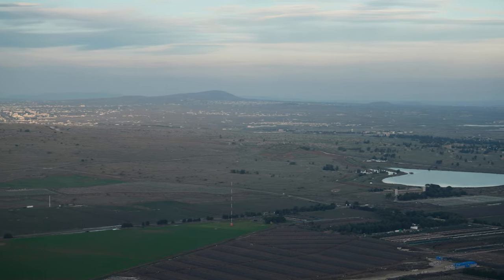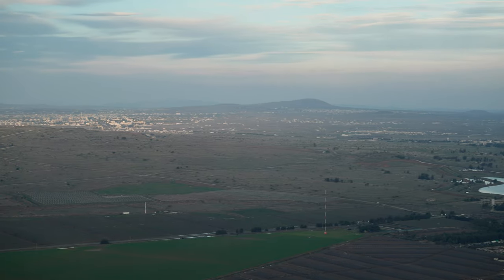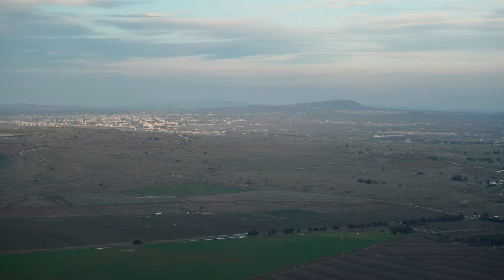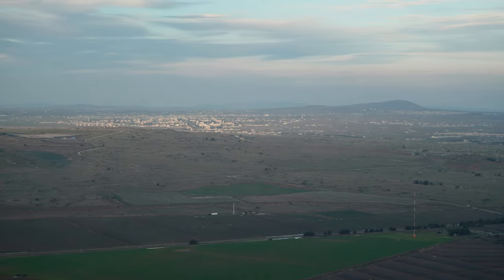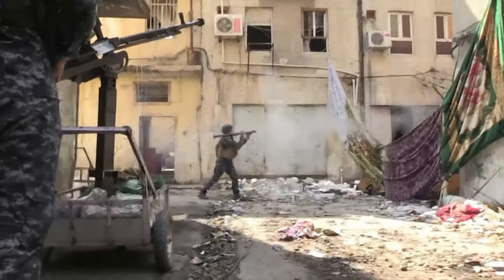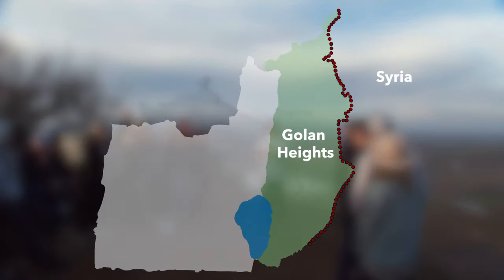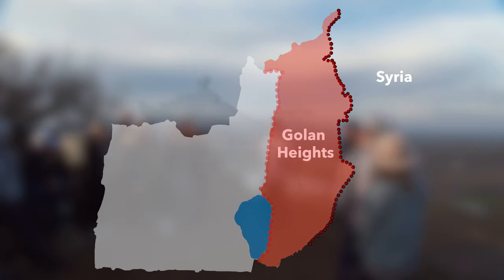Right over here, you can see a radio tower. That is the area of Quneitra. As recently as a few years ago, this is where ISIS was. If you drew a line straight from the northern border of Israel right here all the way down through the Sea of Galilee, the whole area to the east would be a contested or disputed area — called disputed territories.